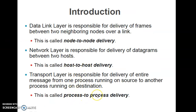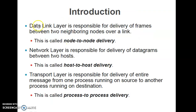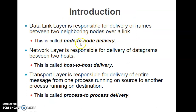To summarize: the data link layer deals with node-to-node delivery of frames; the network layer deals with host-to-host delivery of packets or datagrams between two hosts; and the transport layer deals with process-to-process delivery of segments, where a process is an application running in the sending or receiving computer.